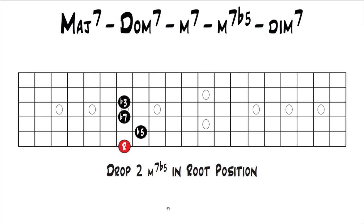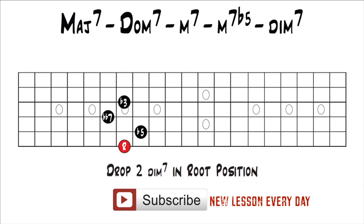The last chord we're going to get to is the diminished 7th chord. To get to that diminished 7th chord by moving one note, we're going to take this flat 7 and move it down half a step to give us a double flat 7. The only difference between a minor 7 flat 5 and a diminished 7th chord is that a minor 7 flat 5 has a flat 7 or minor 7th, and a diminished 7th has a double flat 7 or a diminished 7th. So if we move that down half a step, we get a drop 2 diminished 7th chord in root position.